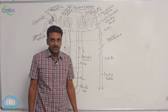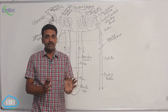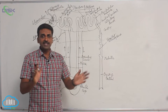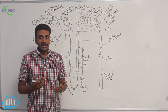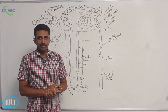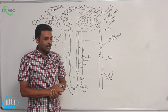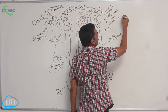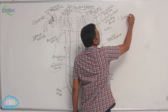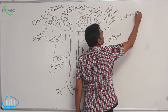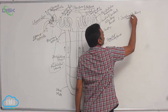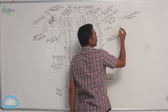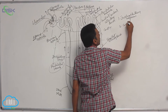If you observe the nephrons, there are a million nephrons in each kidney. We saw the structure of a generalized nephron, but in the kidney there are two different types of nephrons. One is juxtamedullary nephrons, and the other is cortical nephrons.